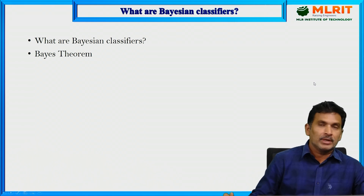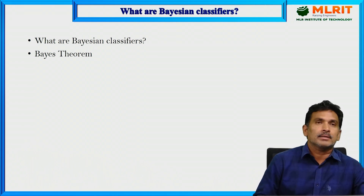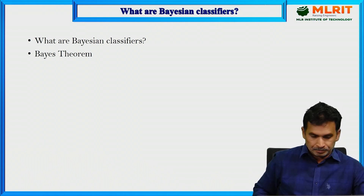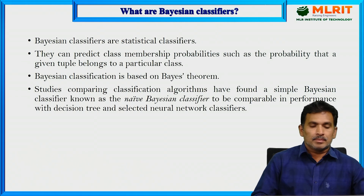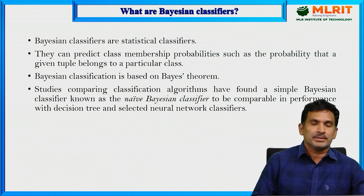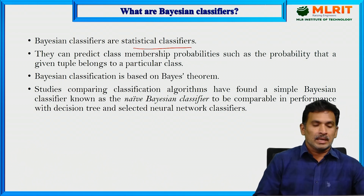Mainly we are going to cover what Bayesian classifiers are, and then we are going to have a detailed discussion on Bayes' theorem. Bayesian classifiers are statistical classifiers — statistics meaning based on probabilities.